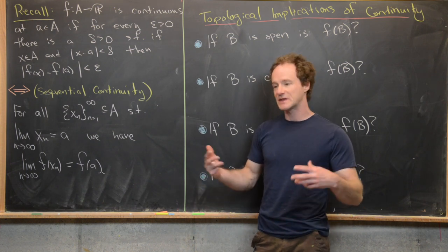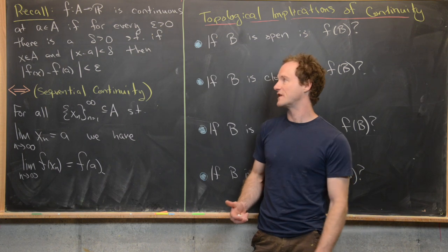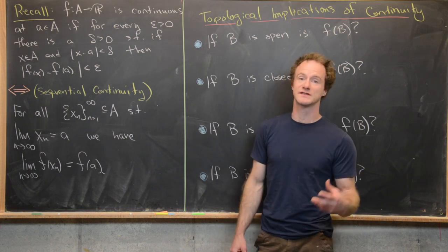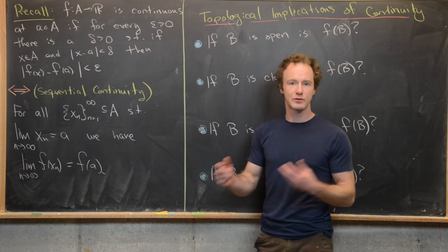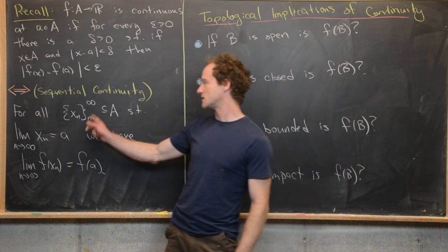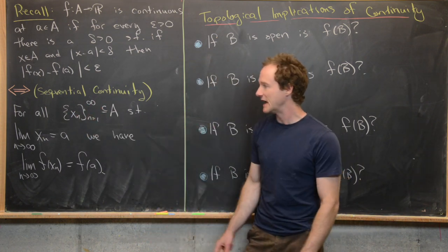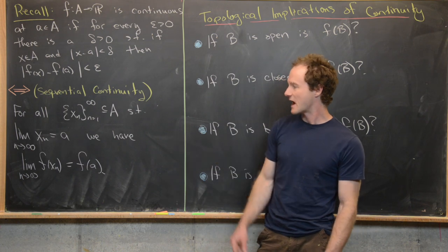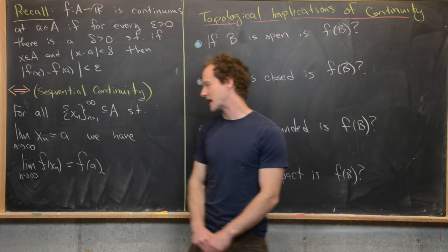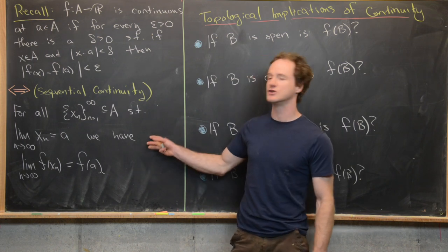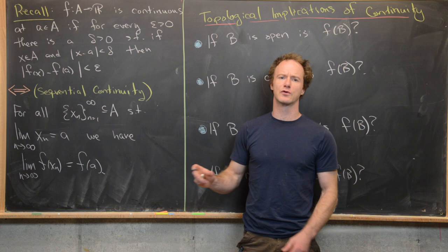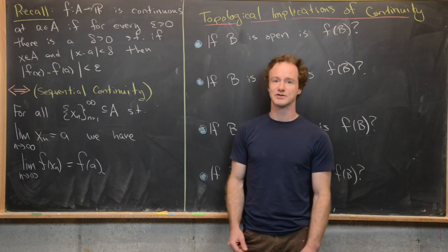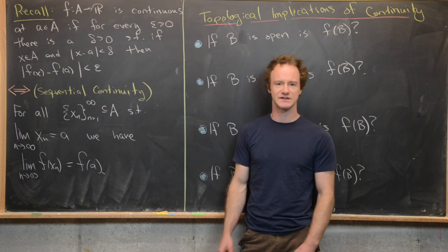So epsilon is like a challenge — can you get the function within epsilon of the value f(a)? This is equivalent to sequential continuity, which we proved in a previous video: for all sequences x_n in A such that the limit as n goes to infinity of x_n equals a, we have the limit of f(x_n) equals f(a). This is often useful for proving algebraic properties of limits and continuity, because we already know all the algebraic properties of limits of sequences.